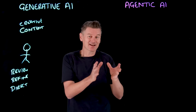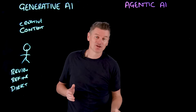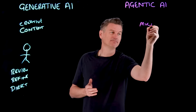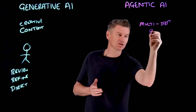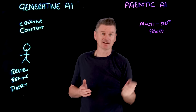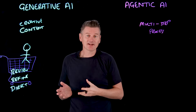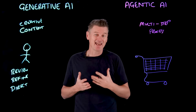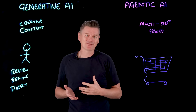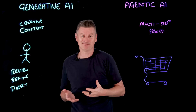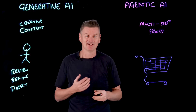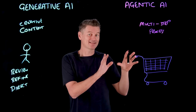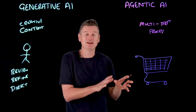Agentic AI thrives in scenarios requiring ongoing management and multi-step processes — not just one thing at a time. Consider a personal shopping agent: given a product to purchase as input, it actively hunts for availability across platforms, monitors price fluctuations, handles checkout processes, and coordinates delivery — largely by itself, seeking input from you only when needed.